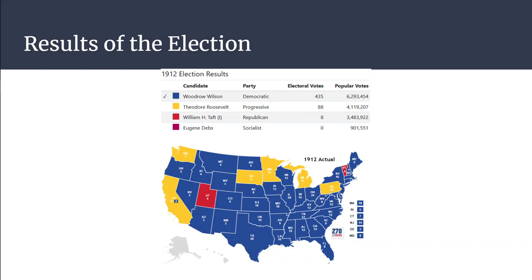Taft suffered one of the worst defeats ever for a sitting president — I think it might be the worst. He only got eight electoral college votes. Eugene V. Debs didn't get any electoral college votes, but he did get a million popular votes, which is over six percent of the population.